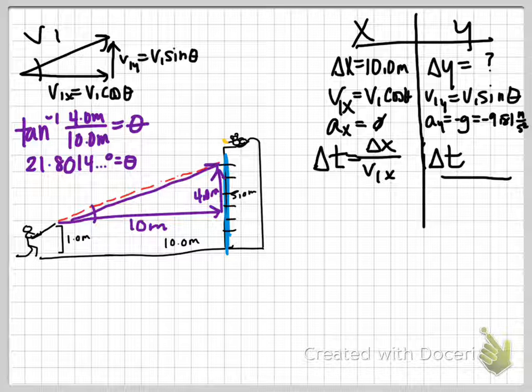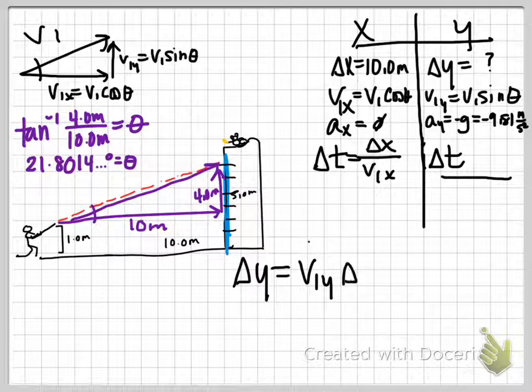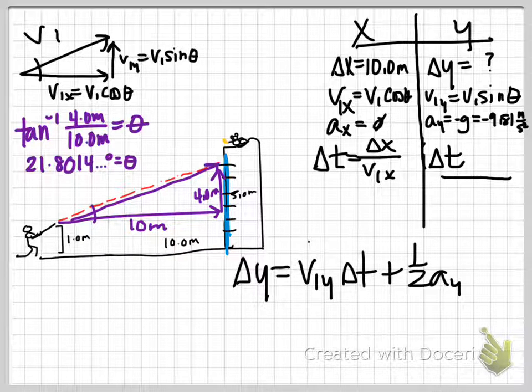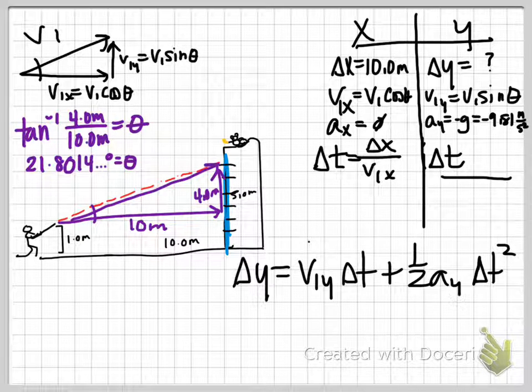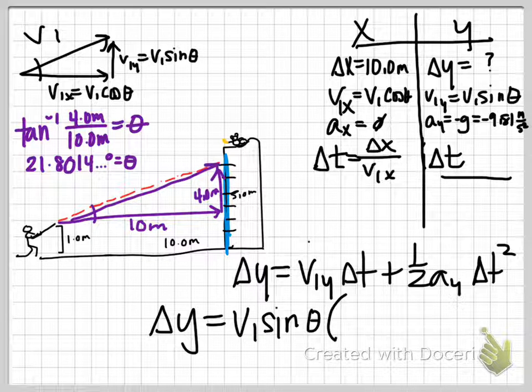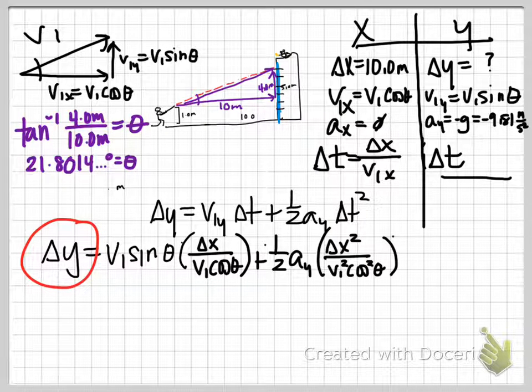Now on the Y axis, I've got delta Y, VI Y, A sub Y, and delta T. So the sort of natural go-to is my favorite expression: delta Y equals VI Y delta T plus 1 half A sub Y delta T squared. This is the point at which I'm going to put in the expressions that I've written for VI Y and VI X. I'm also going to put in the expression that I wrote for delta T. I've got an expression, and I don't have to solve for anything because I'm actually looking for delta Y. It's just a bunch of messy algebra at this point.